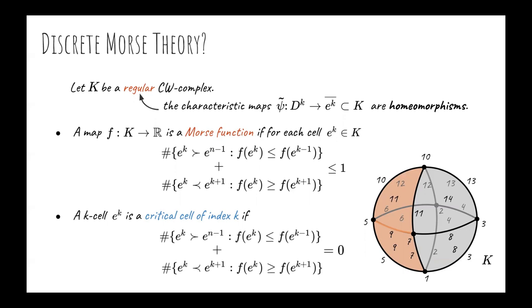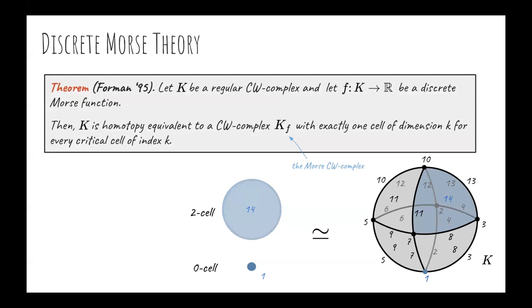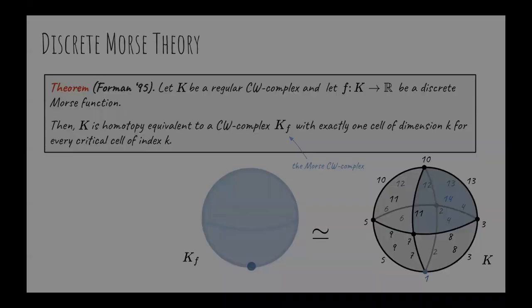In other words, the labeling at this cell respects the ordering given by the dimension without any exception. In our example, the critical cells are marked in blue. The main theorem in discrete Morse theory, proved by Forman in the 90s, says that given a regular complex K and a discrete Morse function, it can be proved that K is homotopy equivalent to a reduced CW complex, sometimes called the Morse complex, with exactly one cell of dimension k for every critical cell of index k. In our example, the Morse complex has a single cell of dimension zero and a single cell of dimension two, which uniquely determines a two sphere.